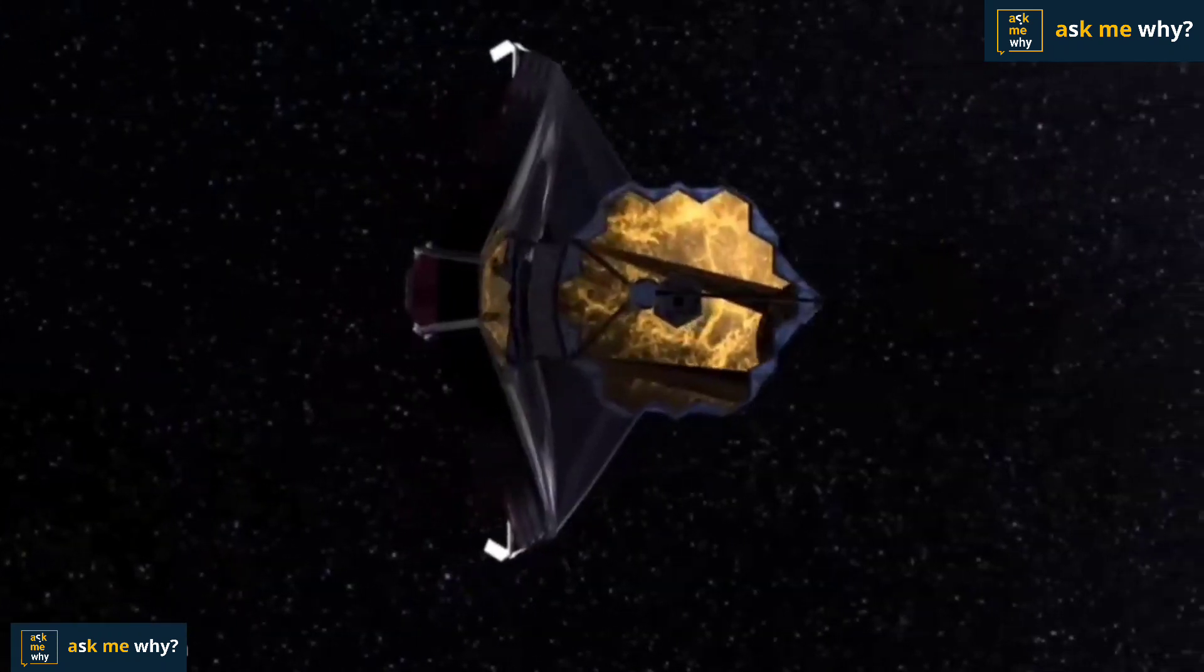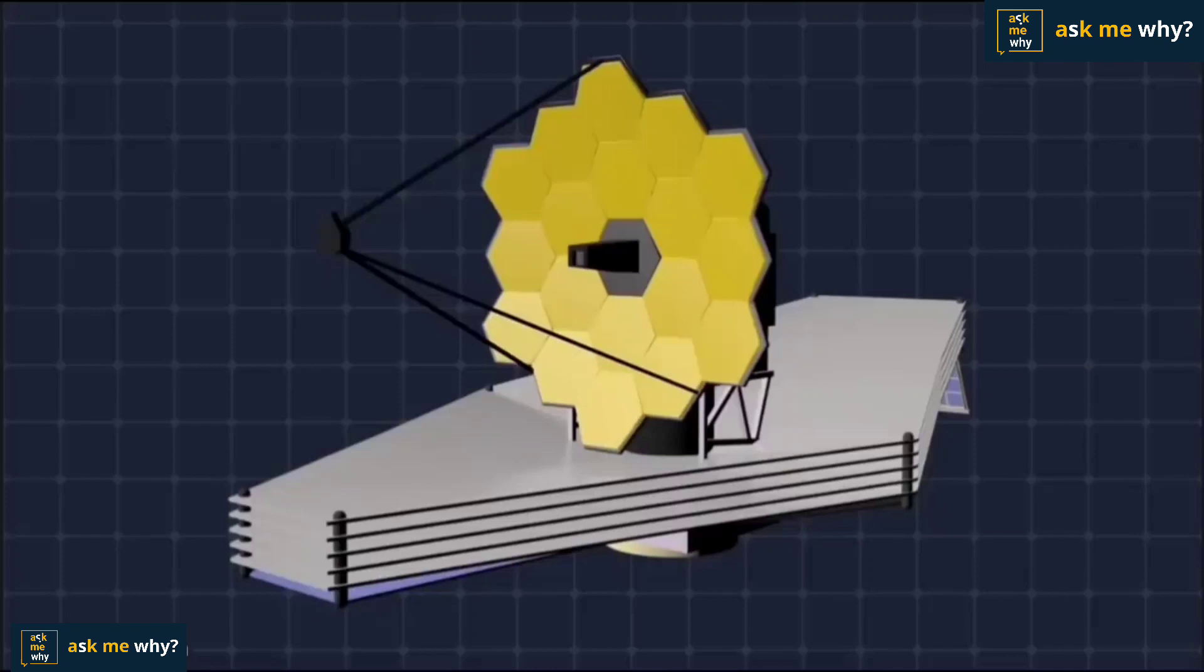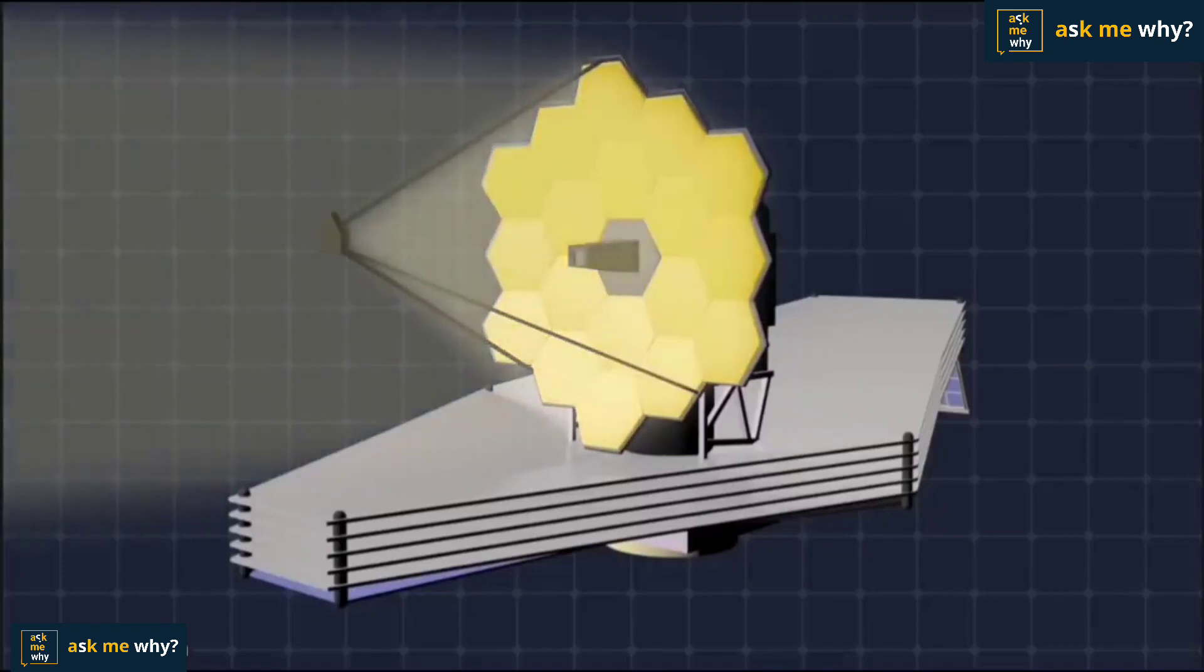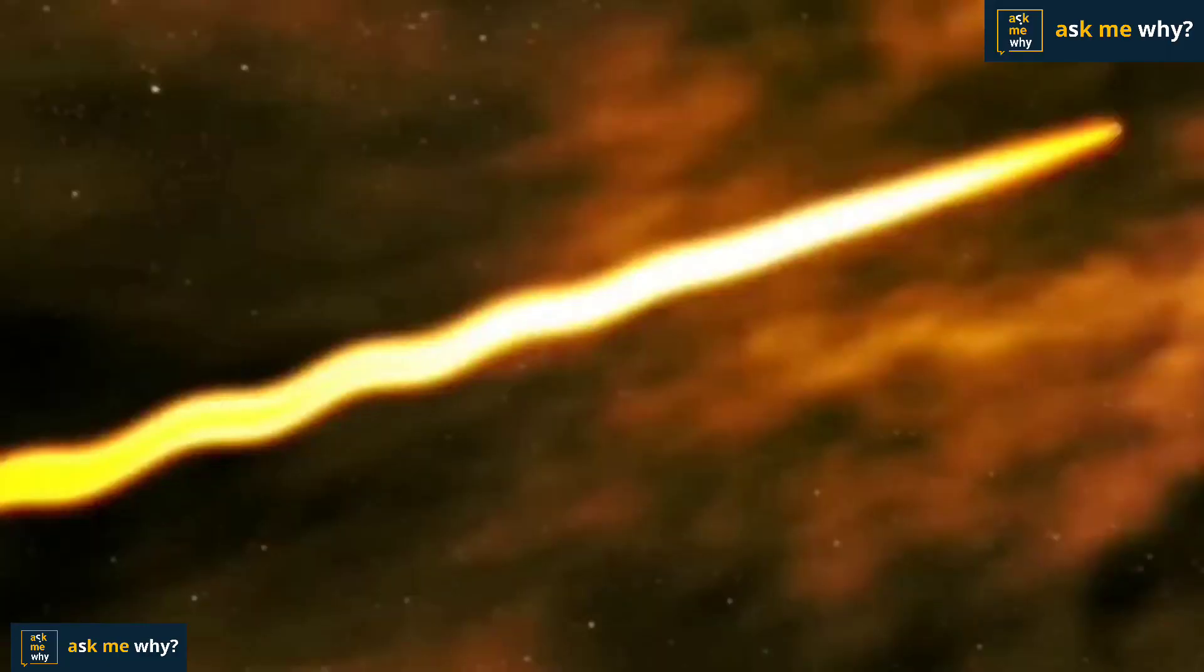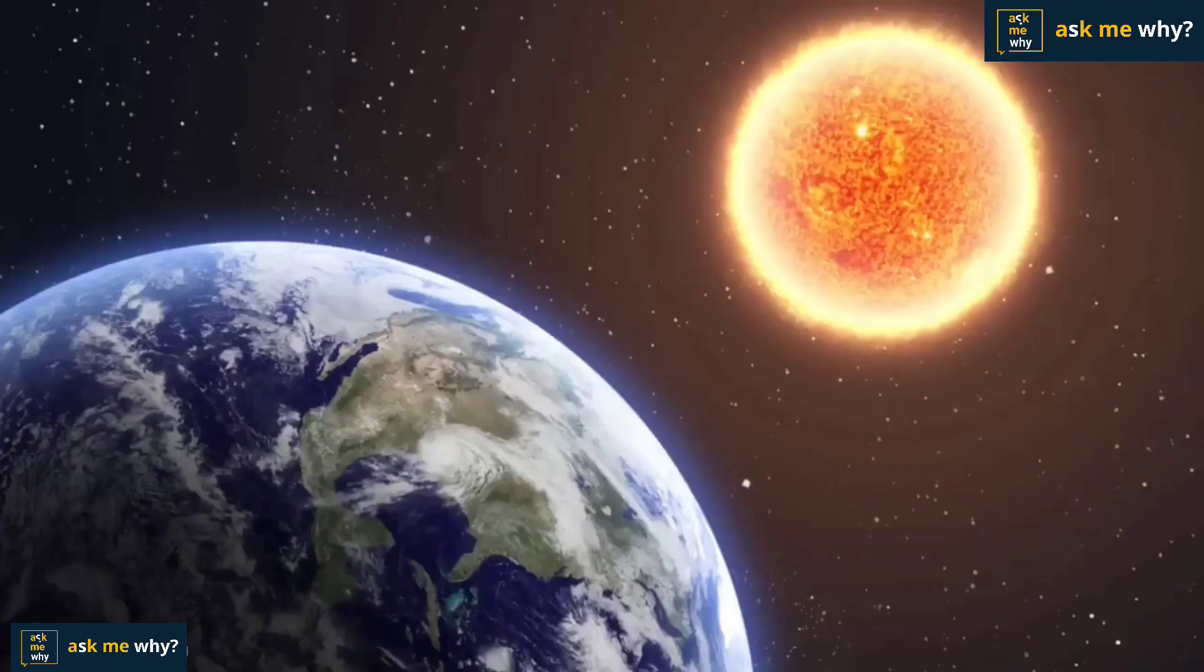In a way, these telescopes can be called time machines. Light travels at a speed of 300,000 kilometers per second. So it takes 8 minutes and 20 seconds for light to reach earth from the sun. Which means the light we see now was produced by sun 8 minutes and 20 seconds ago. So the sun that is visible now is 8 minutes from the past.